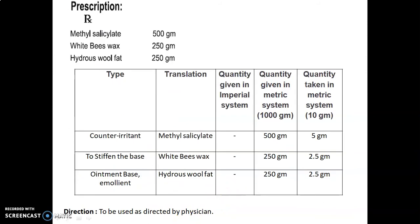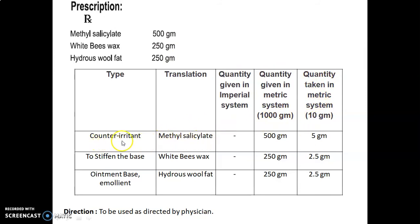The factor is calculated as quantity required divided by quantity given, which equals 10 divided by 1000, equal to 0.01. The prescription (Rx) is: methyl salicylate 500 g, white beeswax 250 g, hydrosol fat 250 g. In the formula table, we have the category, role of ingredient, and quantities. Quantities are given directly in the metric system to prepare up to 1000 g, and quantities taken in the metric system to prepare up to 10 g. Methyl salicylate is used as a counter-irritant; quantity given is 500 g and taken quantity is 5 g.